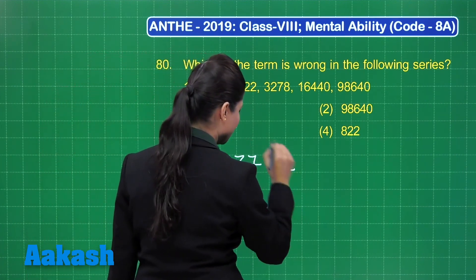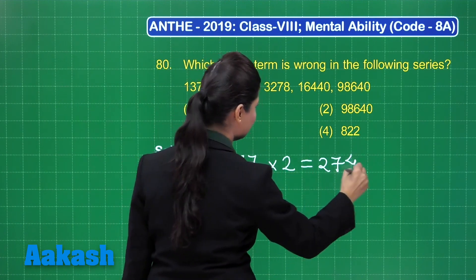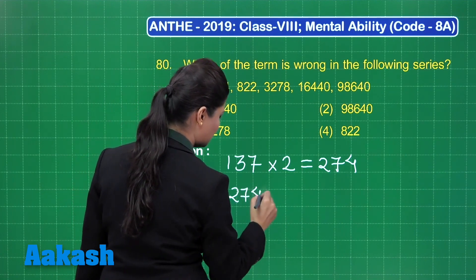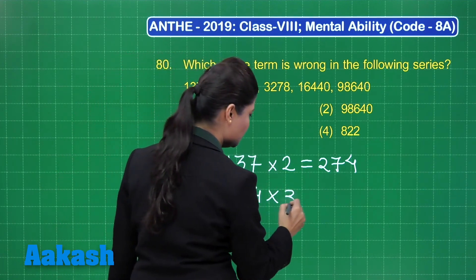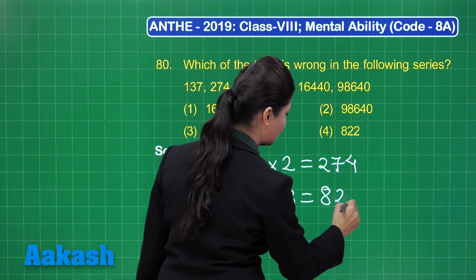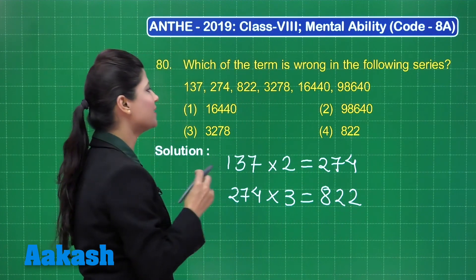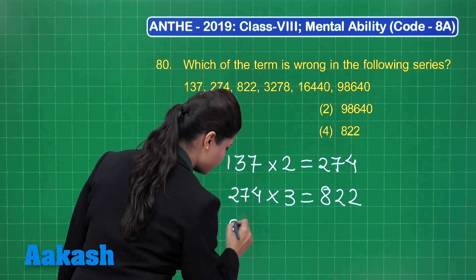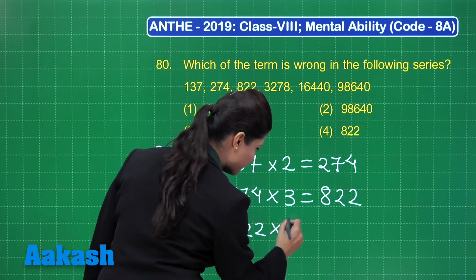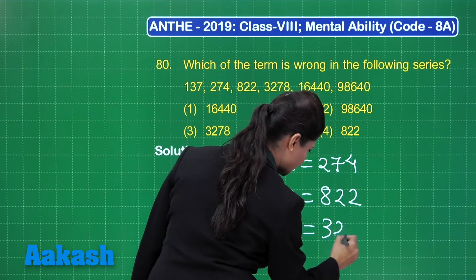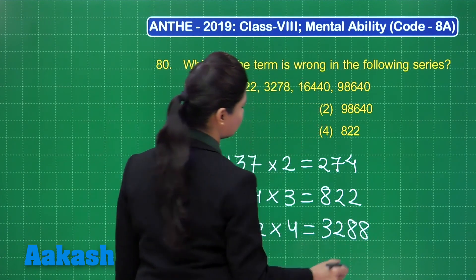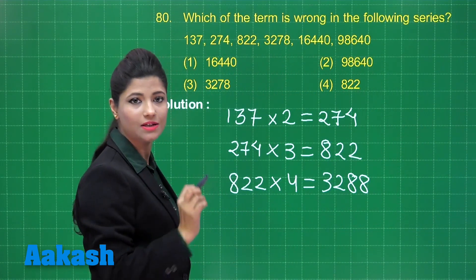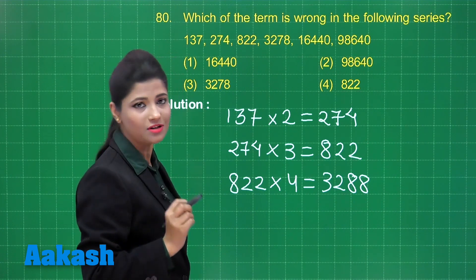When you multiply 137 by 2, you get 274. In similar manner, when you consider 274 and multiply by 3, you reach 822 — so 274 is followed by 822. If I consider 822 and multiply it by 4, I get 3,288, but the number shown in the sequence is not 3,288. So this could possibly be the wrong term.